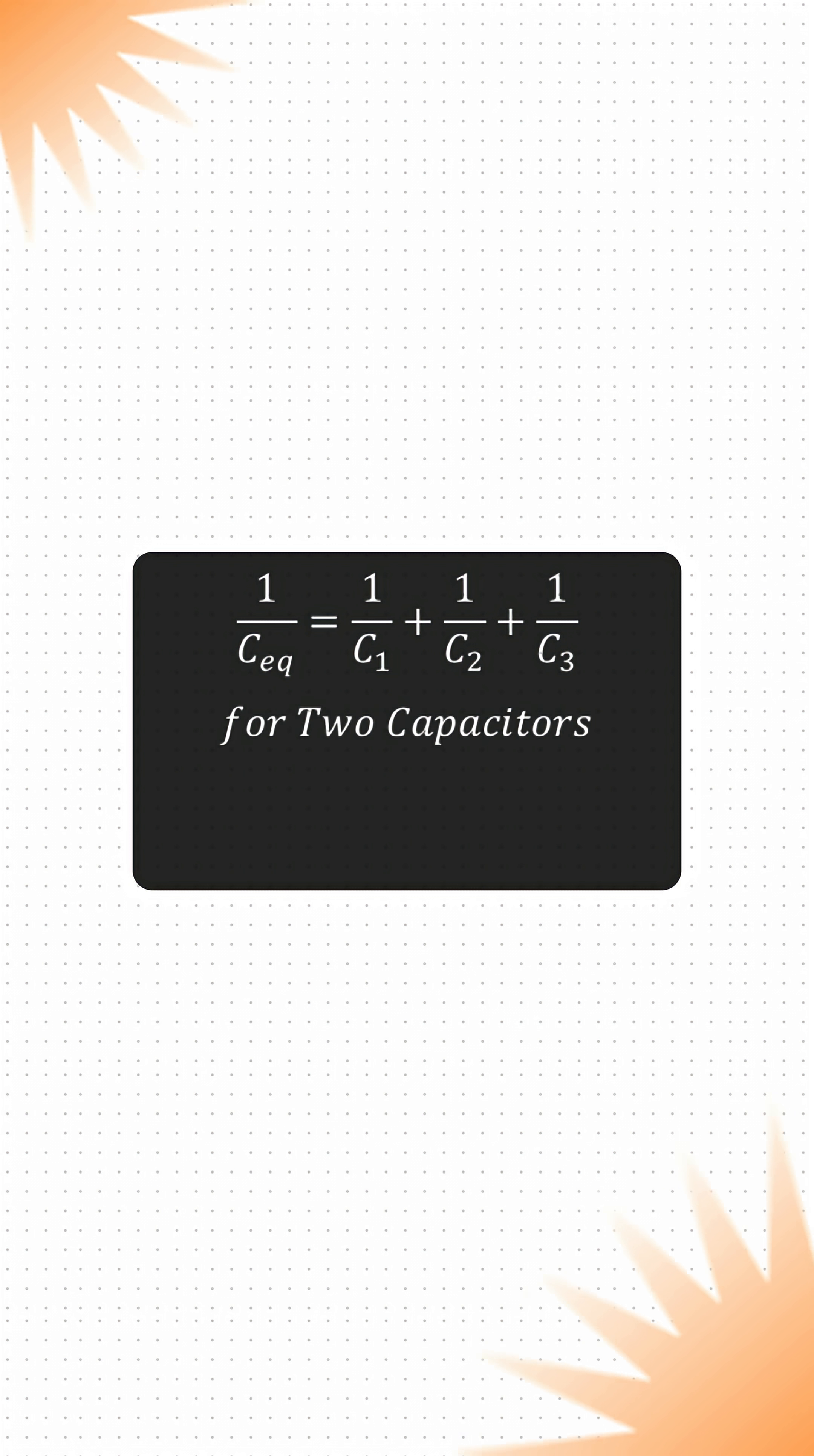But if only two capacitors are connected in series, then their equivalent capacitance can directly be calculated using Ceq = C1·C2/(C1 + C2).